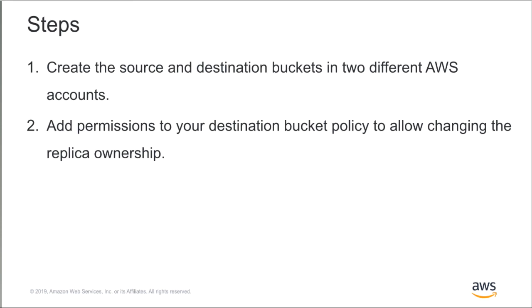Ruhee will walk us through the setup now. We've seen what setting up replication on the console looked like, but let me walk you through how you do this programmatically. As Mo described in the use case, we want to create a second copy of your data with different ownership control. For this, you'd start by first setting up two buckets — a source and a destination bucket owned by different AWS accounts. You can use the create bucket API or a number of other ways to do this programmatically by logging in from different AWS accounts. Once you've created the two buckets, the next step is to add permissions to your destination bucket to allow changing the replica ownership. In replication, the owner of the source object also owns the replica by default, and so to change this behavior, the destination bucket owner needs to provide permissions to the source account owner to change ownership.